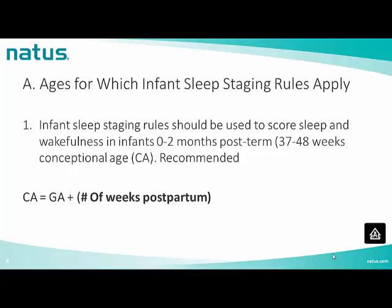Infant sleep staging rules should be used to score sleep and wakefulness in infants from 0 to 2 months post-term, which is 37 to 48 weeks conceptional age. The conceptional age is calculated as the gestational age plus the number of weeks postpartum. The gestational age (GA) is the time elapsed between the first day of the mother's last menstrual period and the day of delivery, expressed in completed weeks. If pregnancy was achieved using assisted reproductive technology, GA is calculated by adding two weeks to the conceptional age.